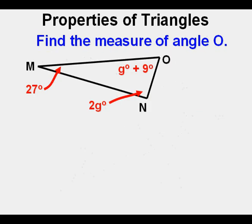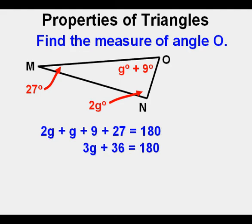Let's look at another application of the triangle sum theorem. Find the measure of angle O. To set it up with an equation, all angles sum to 180. We have 2G plus G plus 9 plus 27 equal 180. We combine like terms, 2G plus G make 3G, and 9 plus 27 make 36.